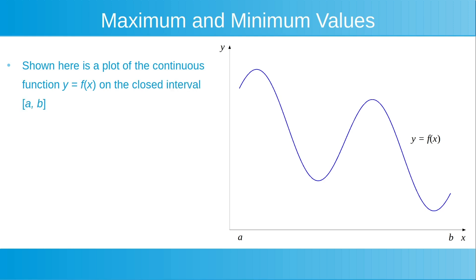Shown here is a plot of the continuous function y is equal to f of x on the closed interval from a to b. We can think of a continuous function as one which we can draw with a pen on a page with an unbroken line, without lifting our pen from the page. When we refer to the closed interval from a to b, we're referring to all of the points between x is equal to a and x is equal to b, as well as the points x is equal to a and x is equal to b.